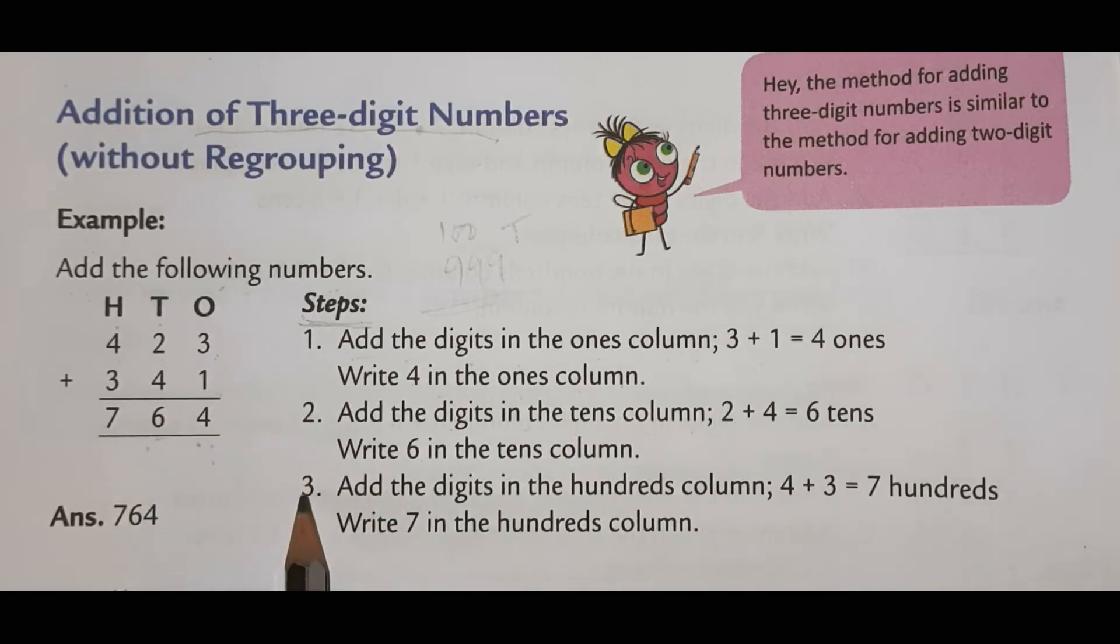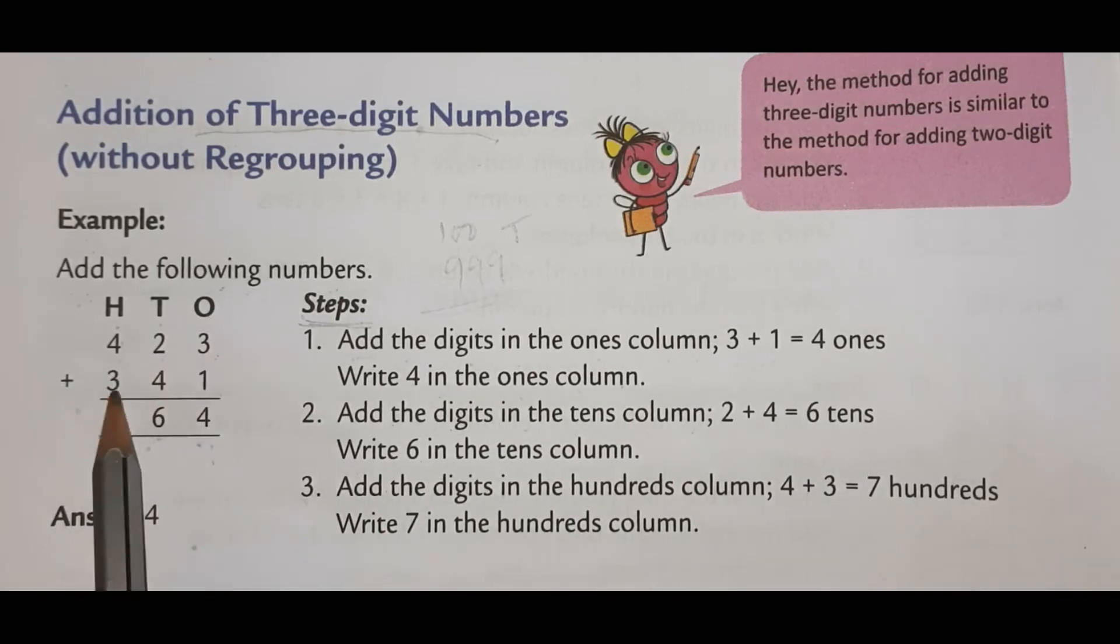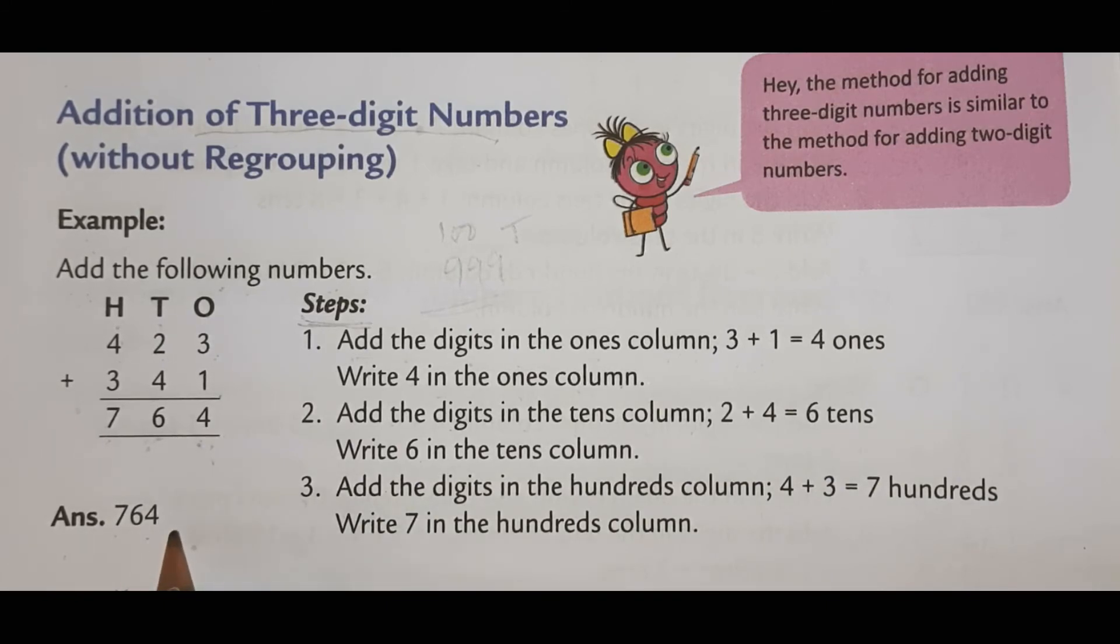Then, point number 3 is add the digit in the hundred's column. 4 plus 3. See, 4 plus 3 equal to 7. So, 423 plus 341 will become 764. So, the answer is 764. Like that, you have to solve the exercise 2.1.